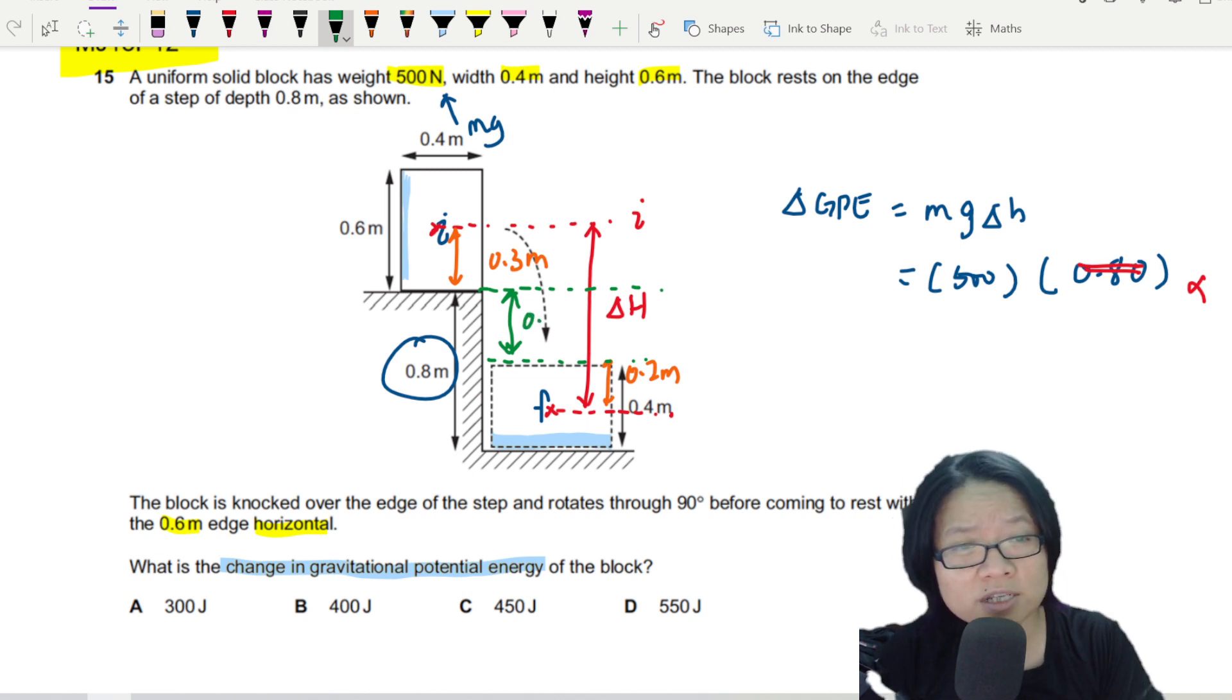So I will take the total change in height will be this plus this, 0.4 plus this 0.2.